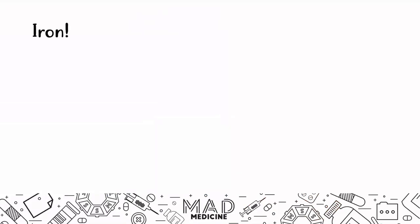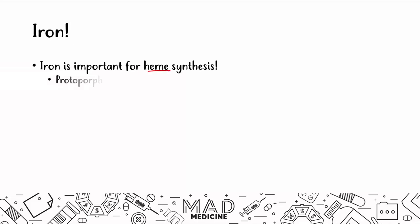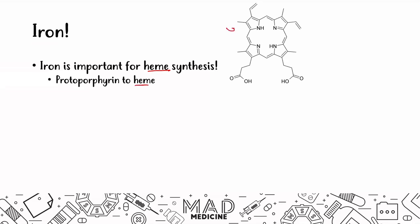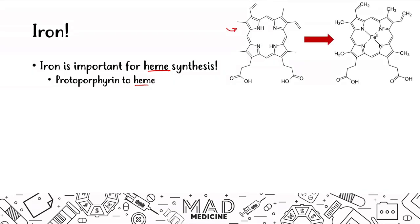Iron is one of the most important molecules in our body, mainly because it is required for heme synthesis. It allows protoporphyrin to become heme by binding to protoporphyrin. When iron binds into the middle, right next to all four nitrogenous groups, you're going to have heme. Then four heme molecules will bind to four globin chains, and you'll get hemoglobin.